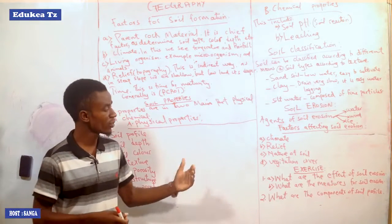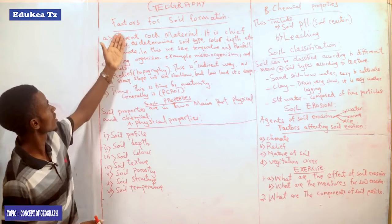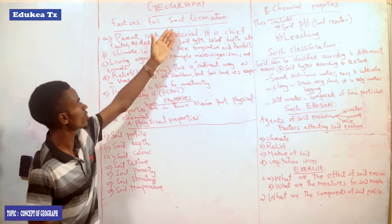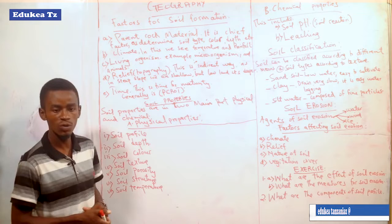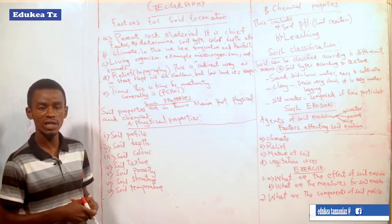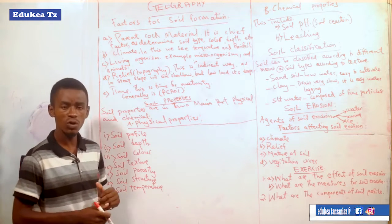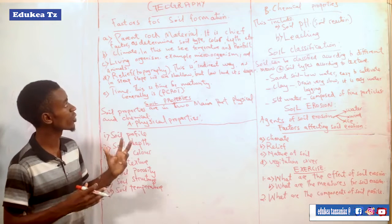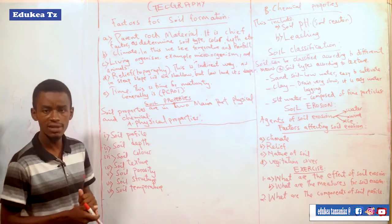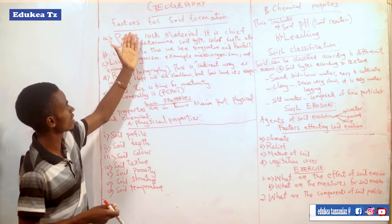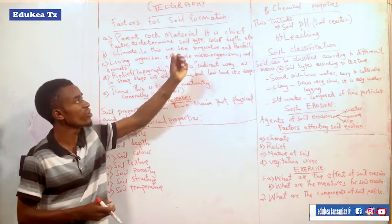We discussed the components of the soil. Another part is factors for the soil formation. Here we look at how the soil can be formed and also the things which help the soil to be formed. Let us start with the factors which can help the soil to be formed.